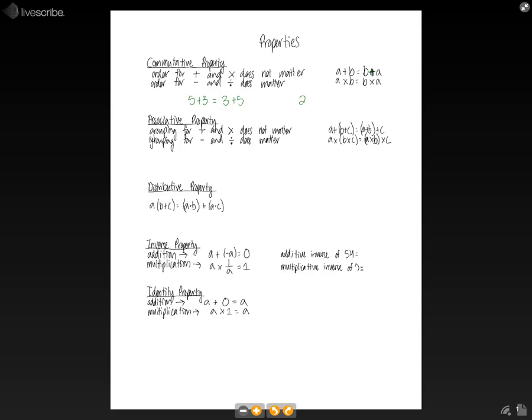And then for multiplication, 2 times 3 will give you 6. 3 times 2 will also give you 6. So that just shows that for multiplication and addition, the order does not matter. And so for subtraction and division, because the order does matter, you cannot apply the commutative property.